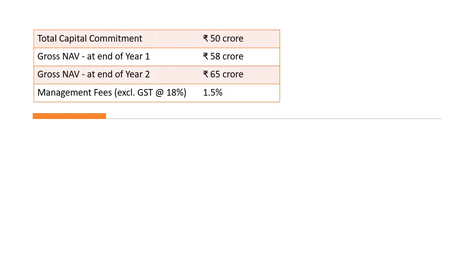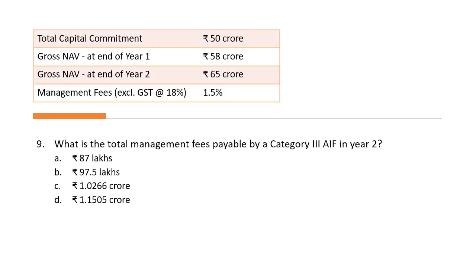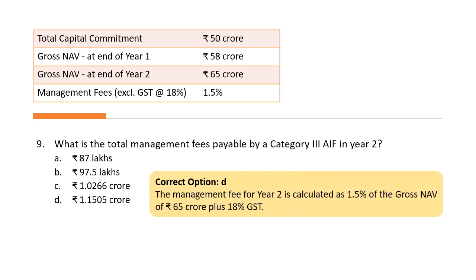Question 9: what is the total management fee payable by Category 3 AIF in the second year? Unlike Category 1 and 2 where it was on total capital commitment, here the management fee is calculated as 1.5% of the gross NAV of the second year. The first year NAV was 58 crores, the second year is 65 crores. So the calculation is 1.5% of 65 crores plus 18% GST, giving answer D — 1.1505 crores.